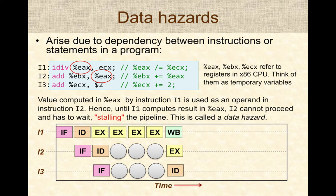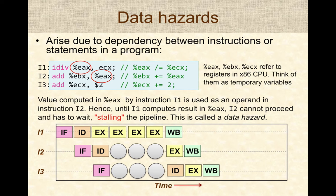Finally, the division operation completes and write-back stores the result. That result can now be used by instruction two, so it starts executing, and instruction three moves into decode. Then instruction two finishes, instruction three executes on the ALU, and instruction three finishes. As shown, there were three stalls in the pipeline arising from the nature of the program executed.